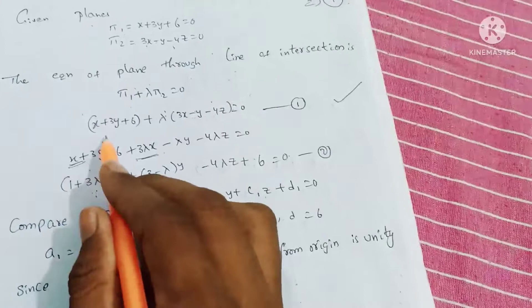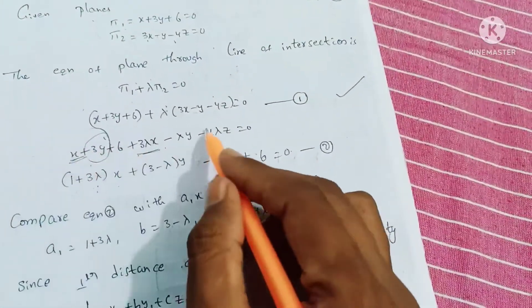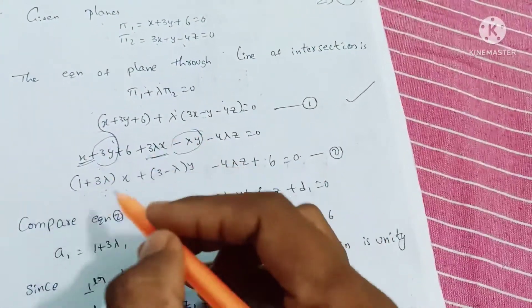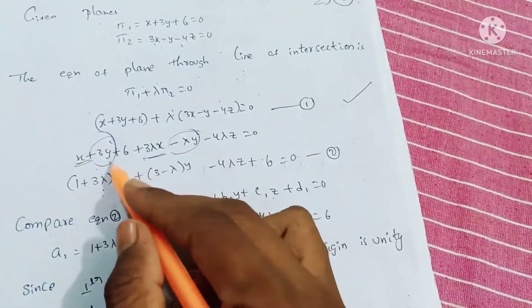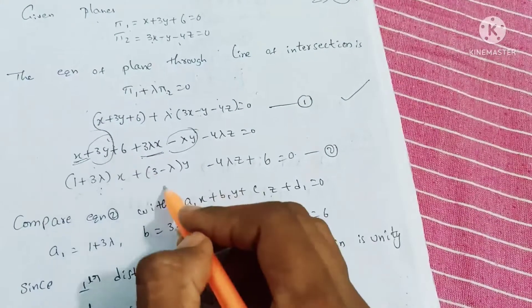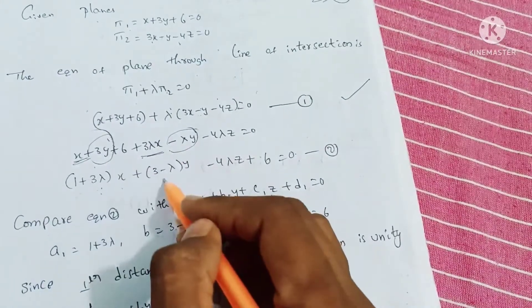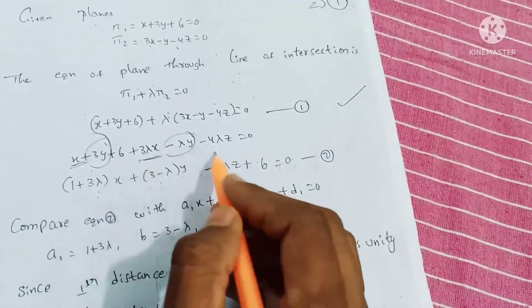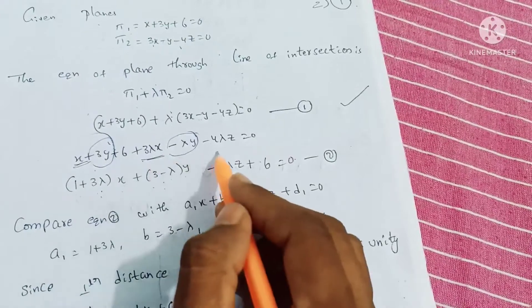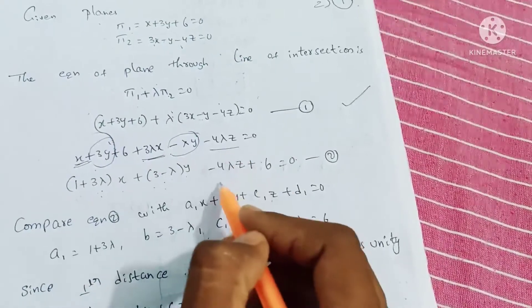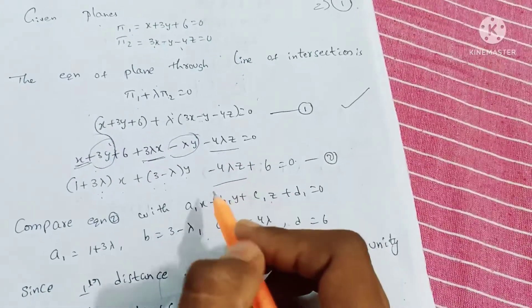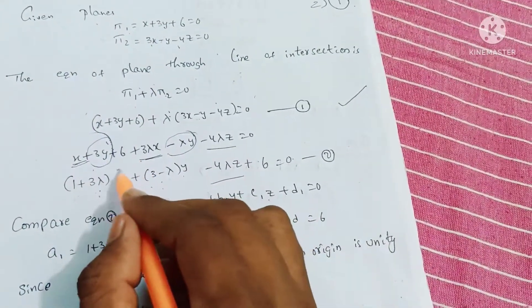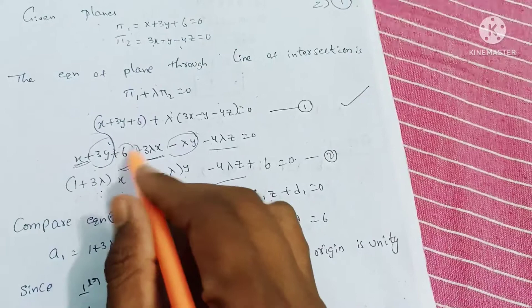Collecting the y terms: 3 minus lambda into y. For the z term, we get minus 4 lambda z, plus constant 6 is equal to 0.